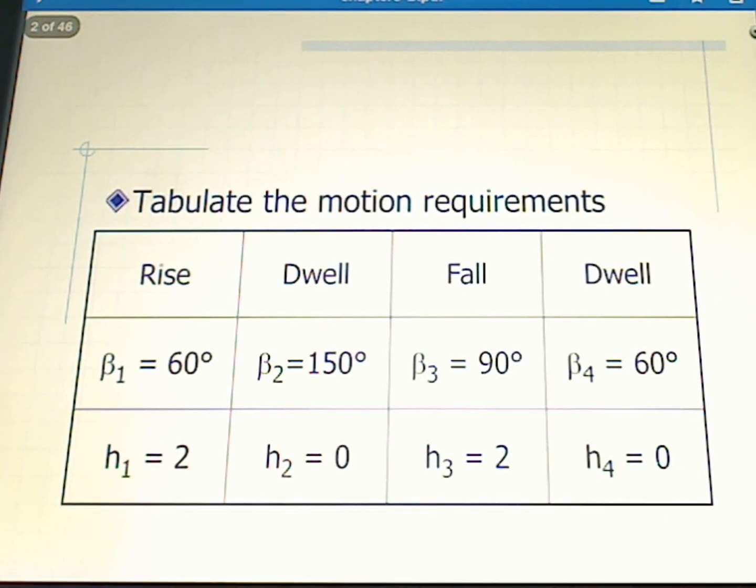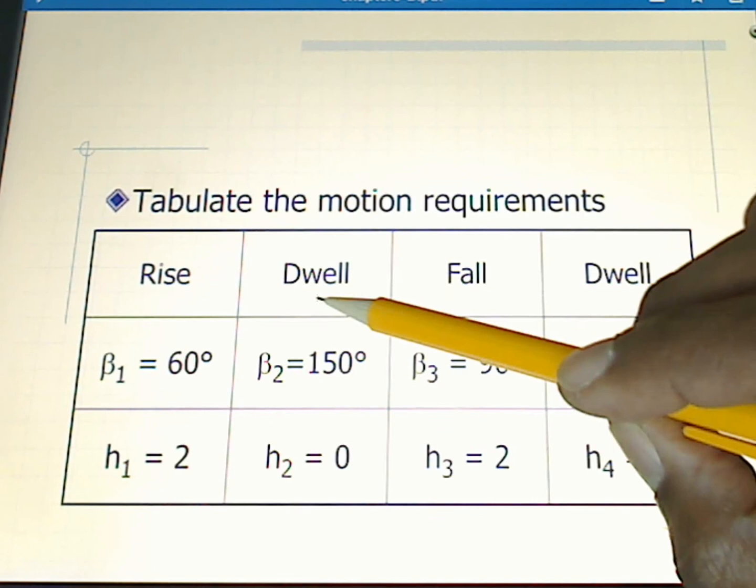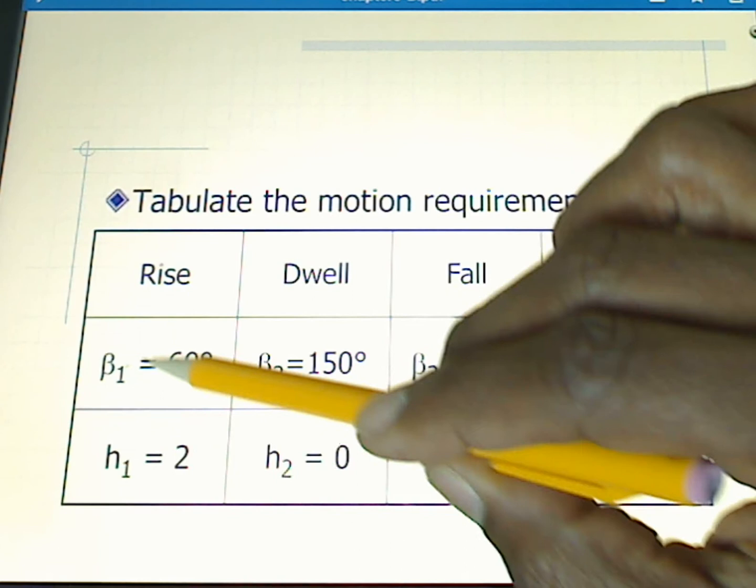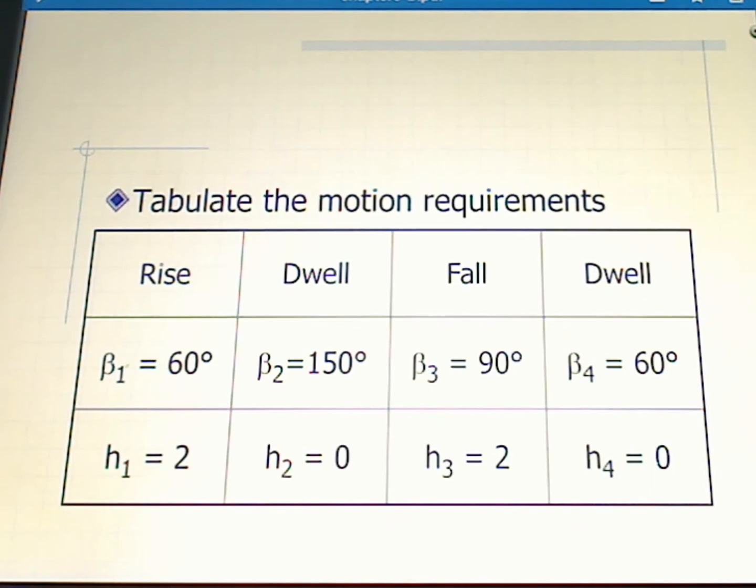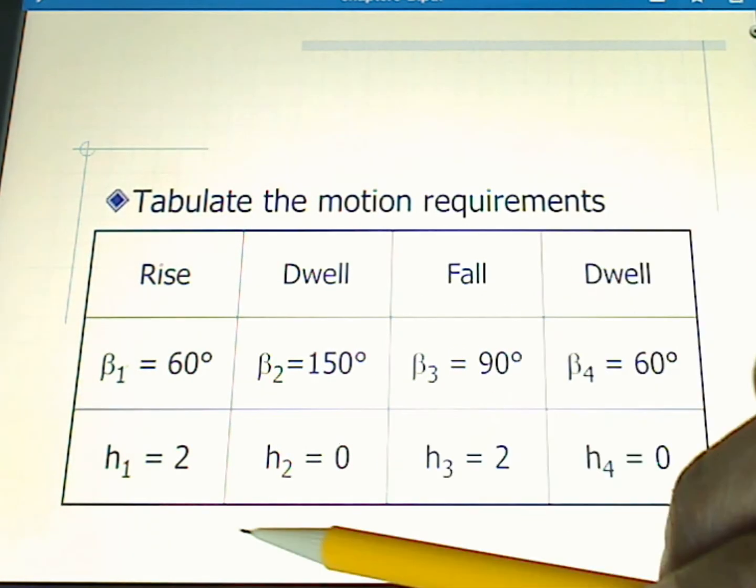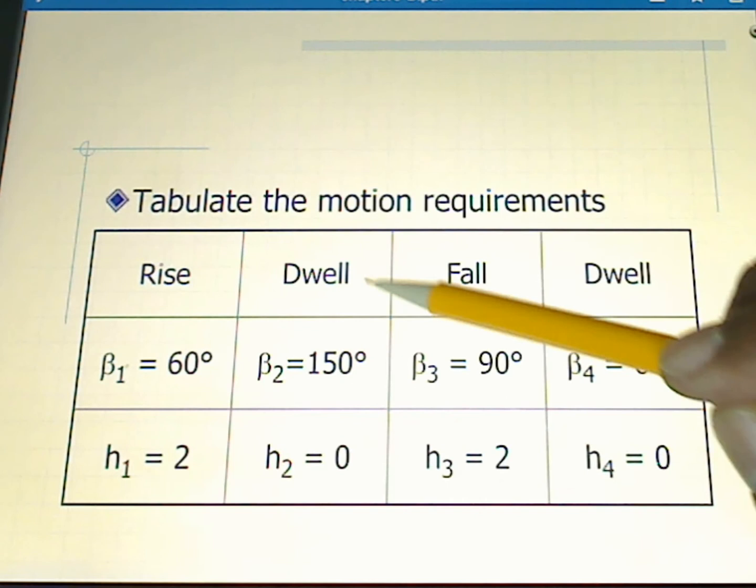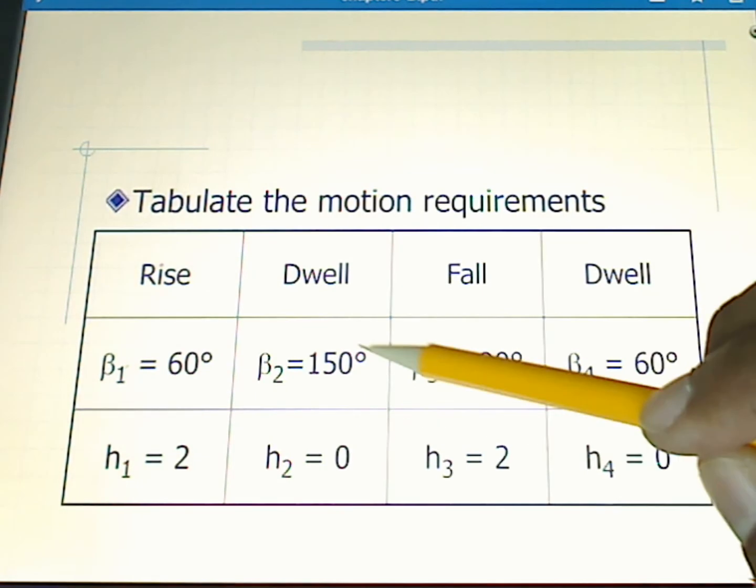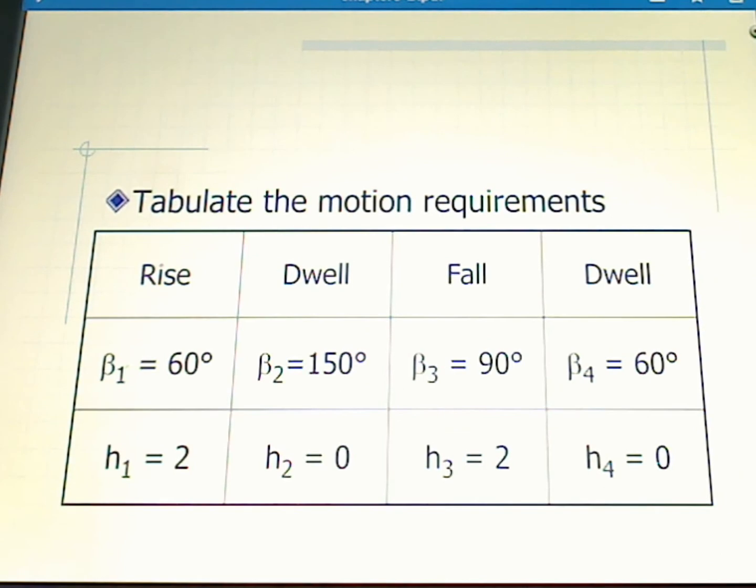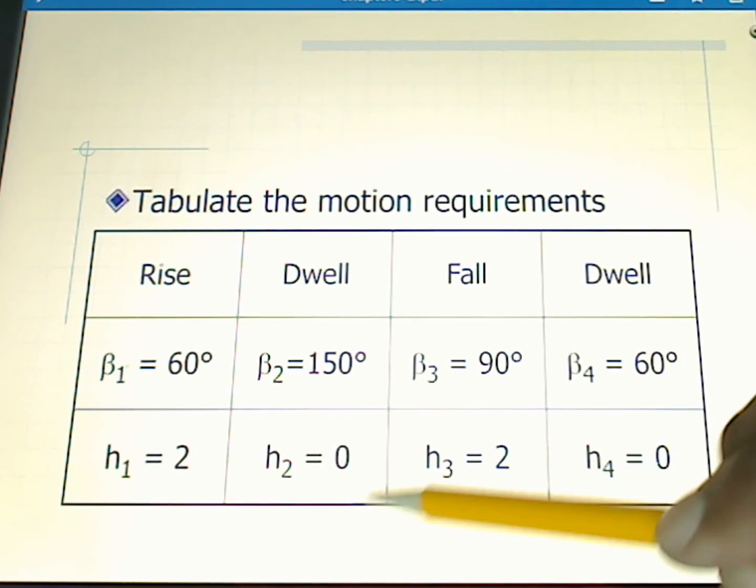Here we've tabulated the motion requirements for this particular cam design. This is a double dwell with two dwells, a rise in 60 degrees. This 60 degrees is beta one. There's always a beta associated with any aspect of the cam profile. The rise happens in 60 degrees and it's a two inch rise. Then we dwell for 150 degrees - a second beta because it's a second thing happening in our cam profile. And there's no motion, so h2 is equal to zero.